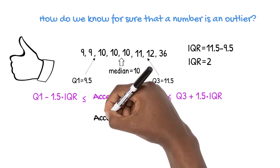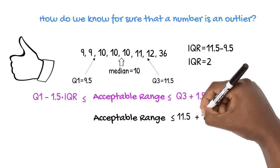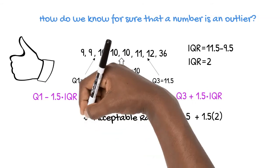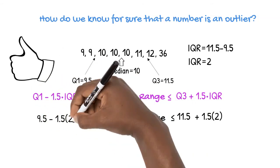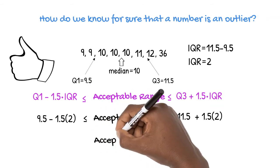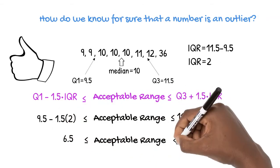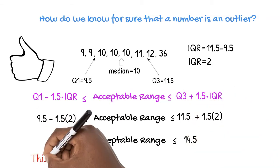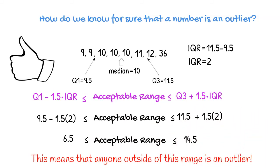Our acceptable range in this example is less than 11.5 plus 1.5 times 2. It is also greater than 9.5 minus 1.5 times 2. Our acceptable range lies between 6.5 and 14.5. This means that anyone outside of this range is an outlier.